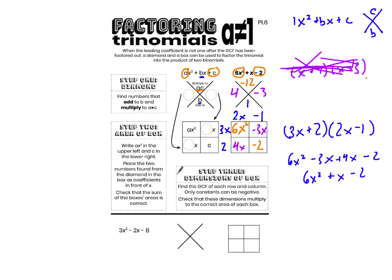Isn't this so fun? For my diamond I'm looking for integers that multiply to a times c, so they need to multiply to 3 times negative 8, which is negative 24. Then they need to add to b, which is negative 2. The integers that multiply to negative 24 and add to negative 2 are negative 6 and 4. Negative 6 times 4 is negative 24, and negative 6 plus 4 is negative 2. That is the step that's just a little different — looking for the diamond problem that multiplies to a times c, not just c.